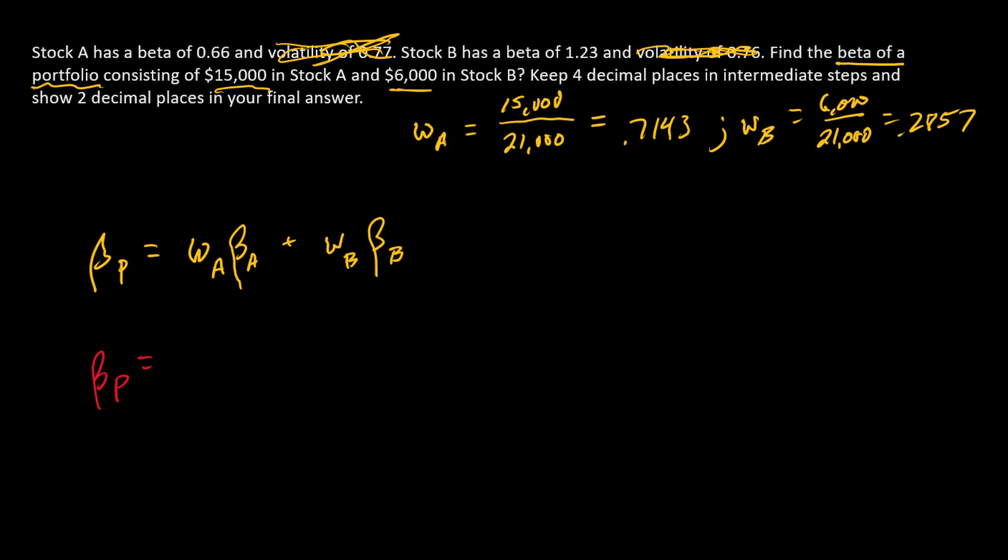the beta for the portfolio is the weight in A. That's 0.7143, this number here. We're going to multiply by stock A's beta, so that's 0.66.